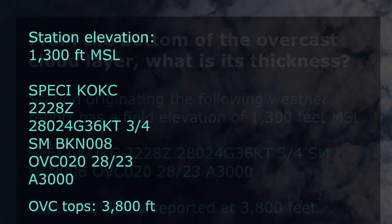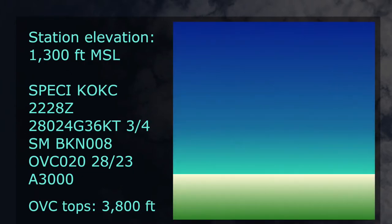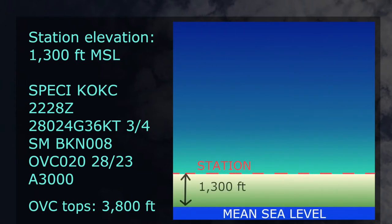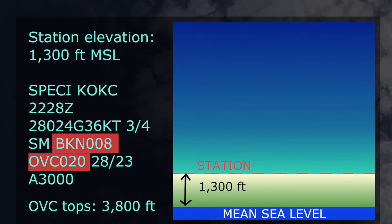Starting with the reporting station elevation at 1,300 feet above mean sea level, our next piece of information is the provided METAR report. It would help to already be familiar with how to read a METAR. For this question, we'll focus on the sky condition portion of the report, now highlighted in red. Here we find the heights of the cloud bases, which are reported with a three-digit number in hundreds of feet above ground level, or AGL. Since the question asks about the overcast layer, we can disregard the broken layer height information.